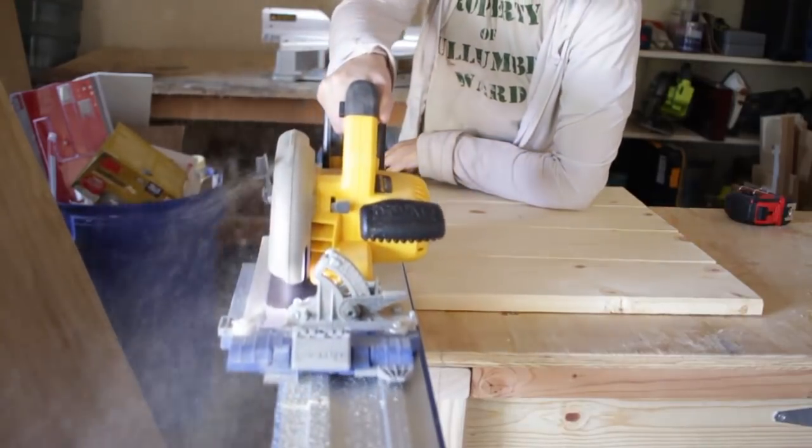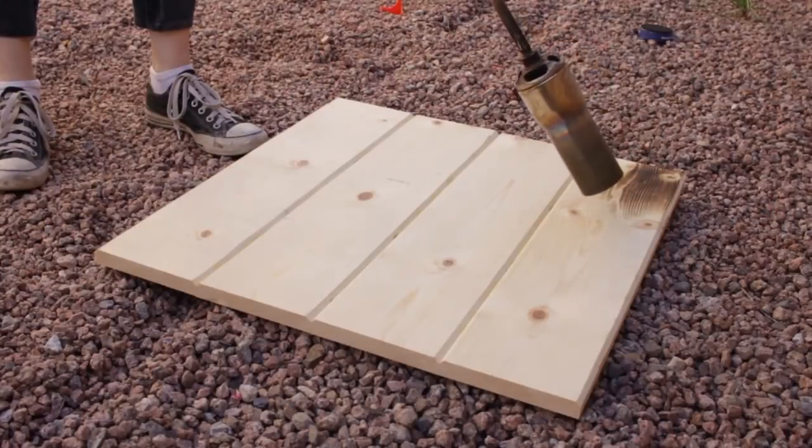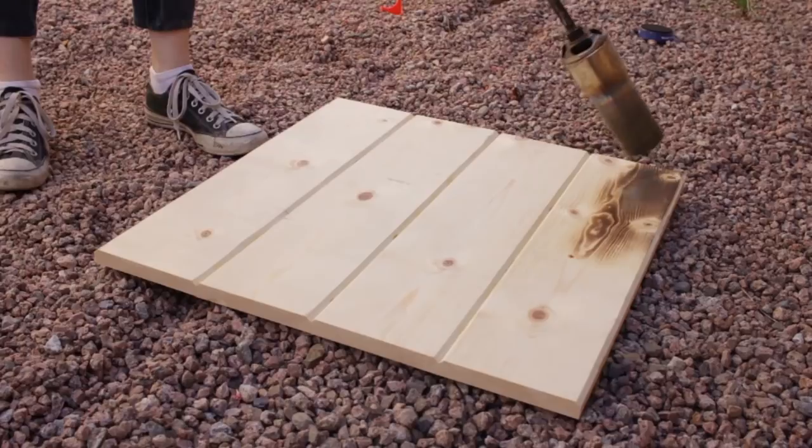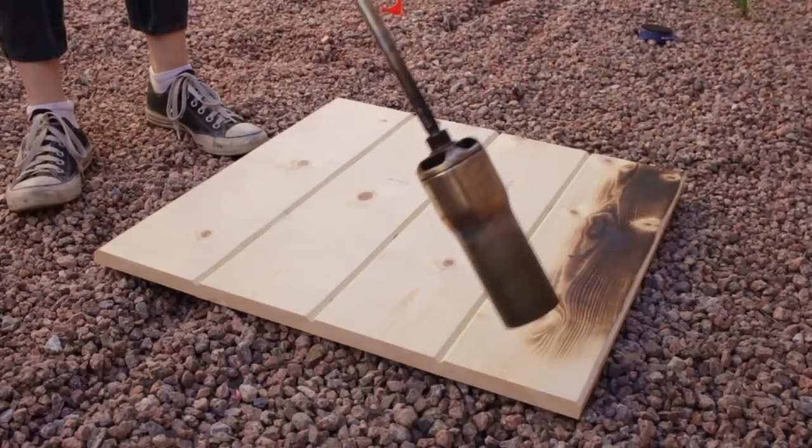With my panel trimmed to size, it was time to start the Sho Sugi Ban treatment. I've seen people use a smaller torch like a butane plumber's torch to char their wood, but this was a fairly large panel so I borrowed a propane torch instead.